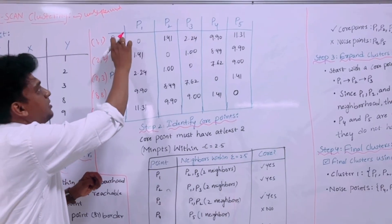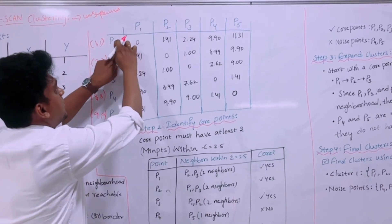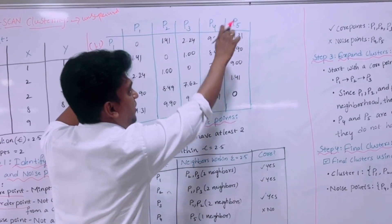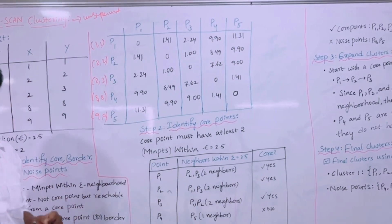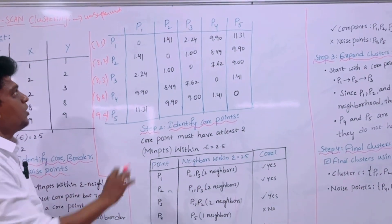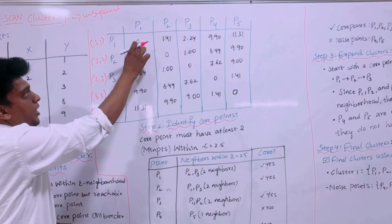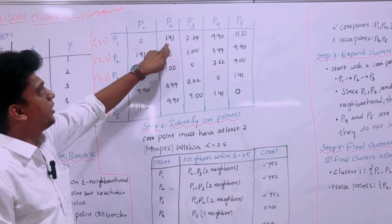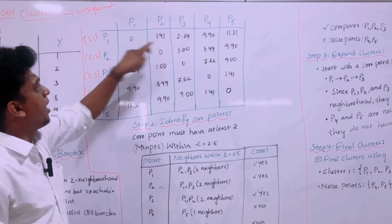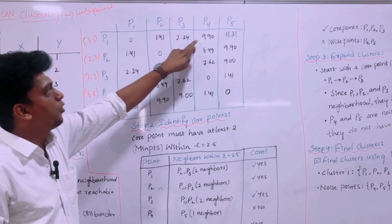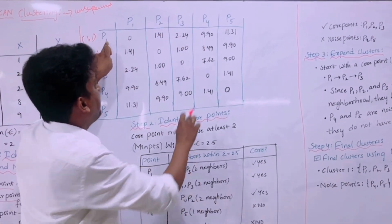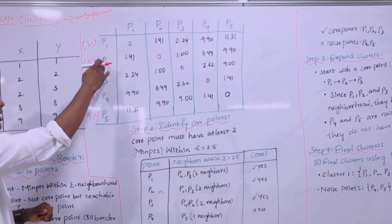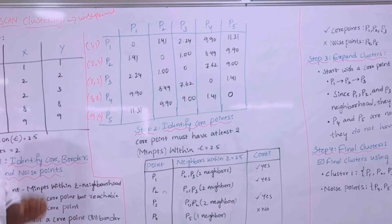We calculate the distances row by row. The distance between P1 and P1 is 0. Between P1 and P2 it is 1.41, P1 and P3 is 2.24, P1 and P4 is 9.90, and P1 and P5 is 11.31. Similarly, we calculate distances for all remaining point pairs in the table.